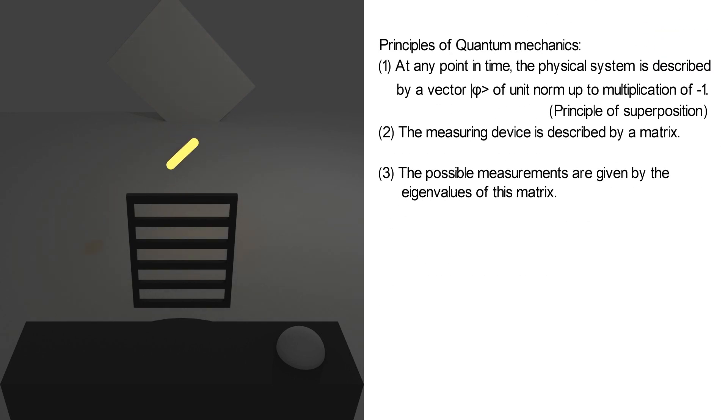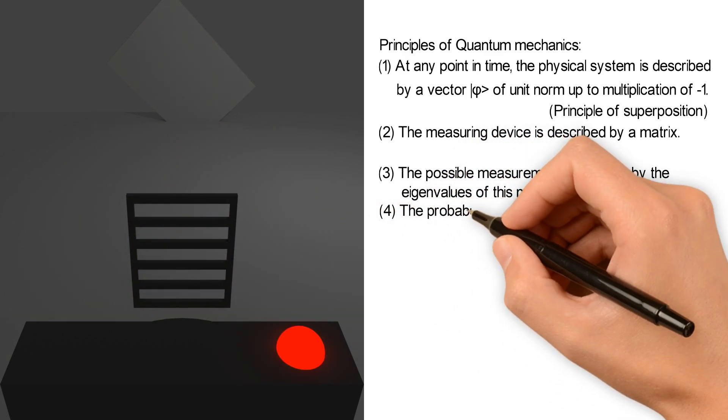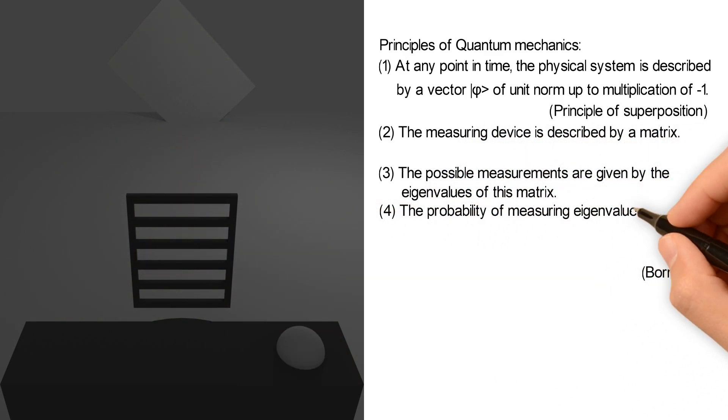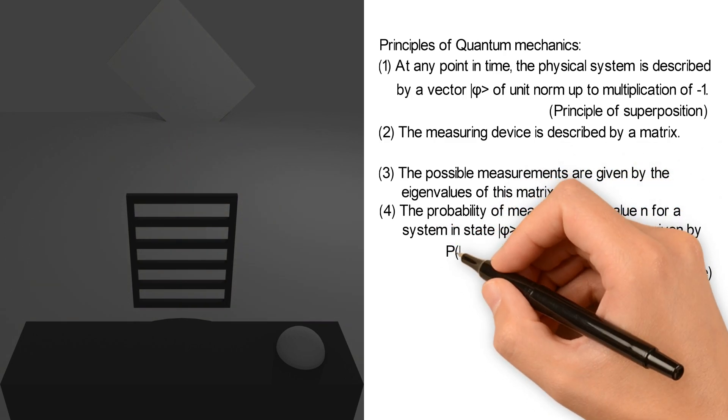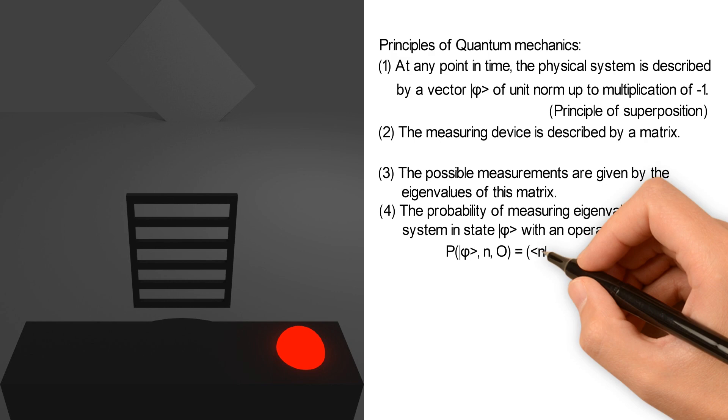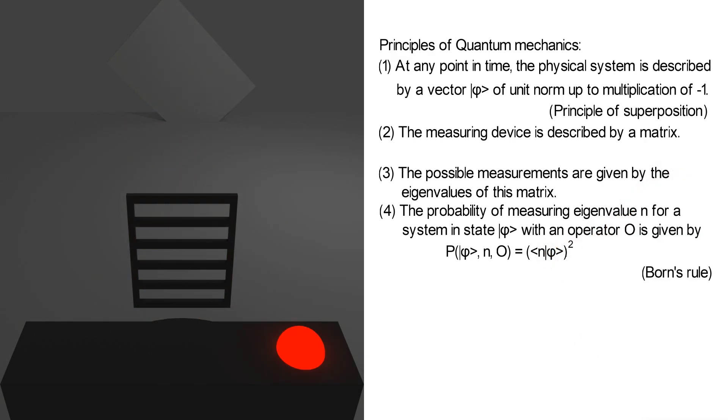This gives us the next principle, which together with the previous one is called Born's Rule. The probability of measuring eigenvalue n for a system in state phi with an operator O is given by the square of the inner product of phi with the corresponding eigenstate n.